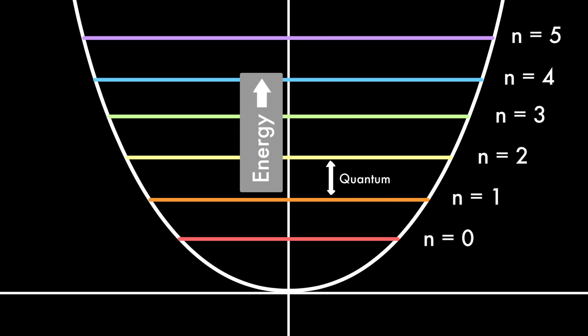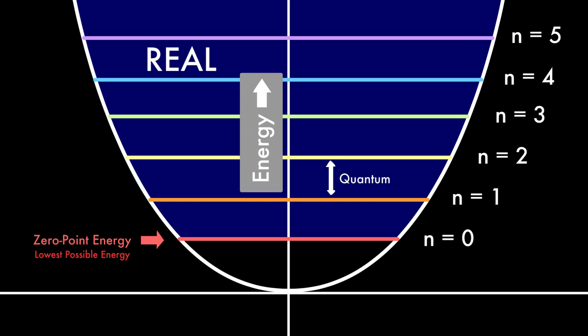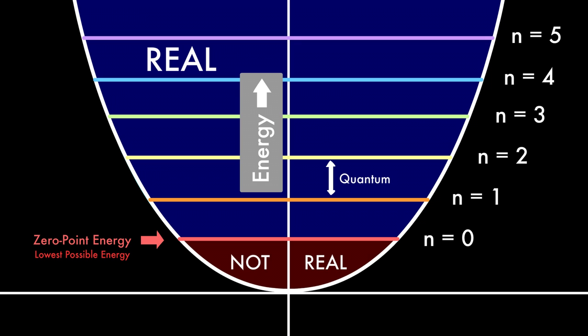What is really interesting about this diagram is what is called the zero point energy, or the energy of the ground state, the lowest possible energy allowed in a quantum system. From this point up on the graph exist real particles, like electrons. No real particles can exist below the zero point.